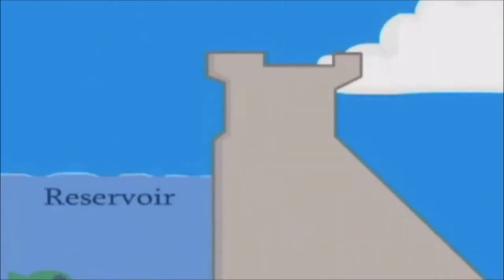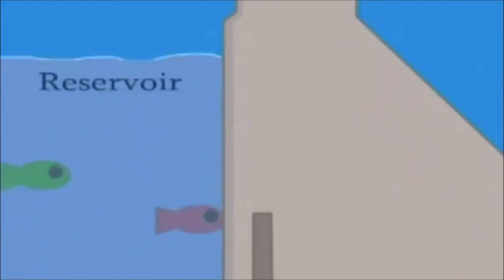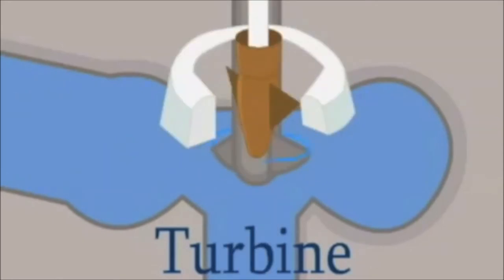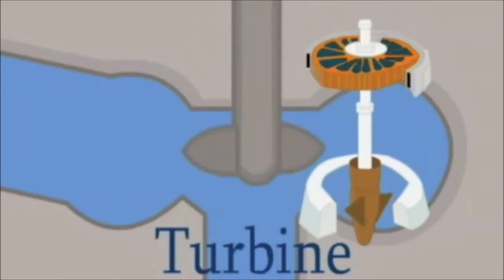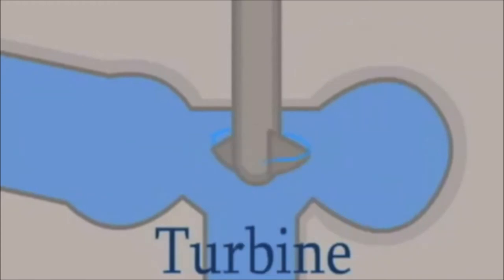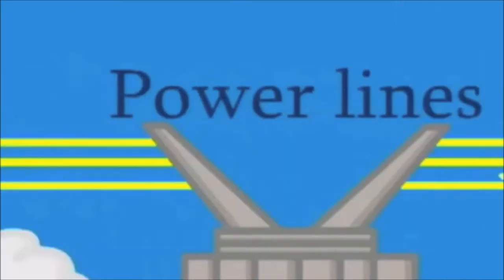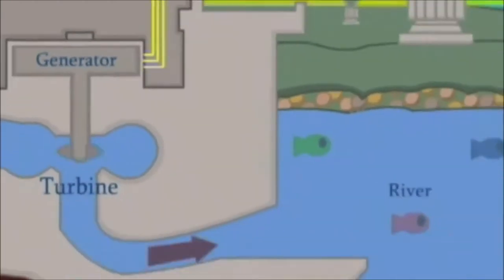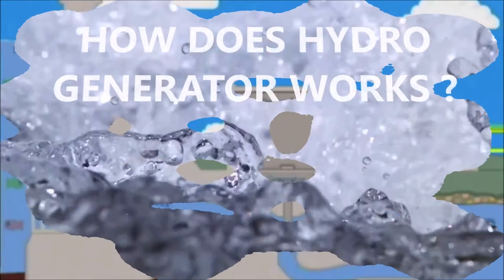The water in the reservoir is released through the intake, which is a gate-like structure that manages the flow of water. Furthermore, the water streams into the penstock and over a turbine. The force of the water results in the spinning of the turbine, operating the generator. The generator produces electricity, which is then transferred to homes and businesses. The remaining water is released back into the waterways to protect...